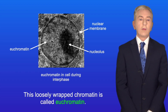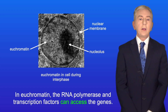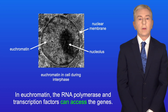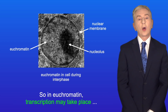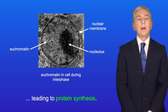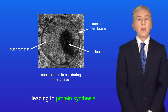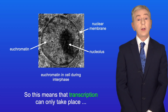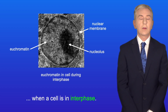This loosely wrapped chromatin is called euchromatin. In euchromatin the RNA polymerase and transcription factors can access the genes, so transcription may take place leading to protein synthesis. This means that transcription can only take place when a cell is in interphase.